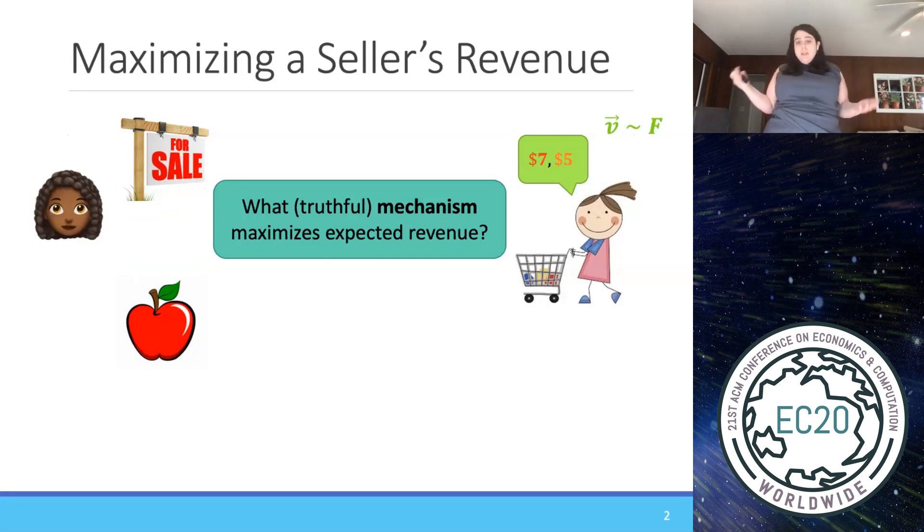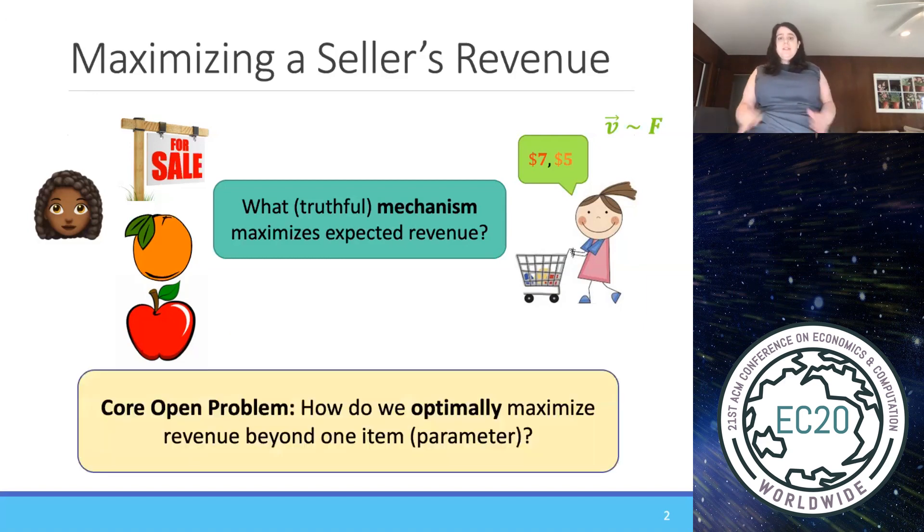Now, if the seller is only selling an apple, then this is completely resolved from Meyerson in 1981, and there's just some price that she should post with respect to the distribution in order to get the maximum revenue. But as soon as we have an apple and an orange, things get very complex, and we still don't know how to solve this. So this is a core open problem in algorithmic game theory. How do we optimally maximize revenue beyond just one item or one parameter for the buyer?